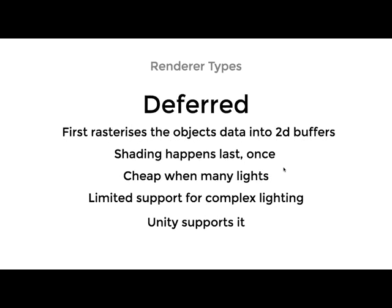There is also the deferred renderer, which first rasterizes the objects into image buffers containing the information you'll need later for a lighting pass. It's way cheaper when you have many lights, but it is limited by the buffer size, so you have to choose which information to include and which to discard. It also doesn't work with transparent objects, so you still need some forward rendering for those. It's bad with aliasing and has higher setup costs, but scales up better. With Unity, your choice is either forward or deferred, and this talk will always use forward.